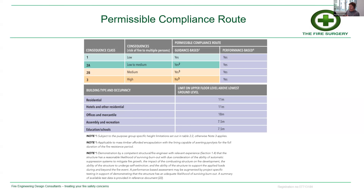Due consideration must be given to the ability of automatic suppression systems to mitigate fire growth, the impact of the combusting structure on fire development, the ability of the structure to undergo self-extinction, and the ability of the structure to support applied loads during and beyond the fire event. Essentially what you're trying to prove is that once a fire has burnt through the moveable fire load in the compartment, the fire will die down, the exposed timber will stop charring and eventually auto-extinguish, and the remaining undamaged timber is of sufficient thickness to still carry the structural load — so the structure remains standing post-fire without collapse.